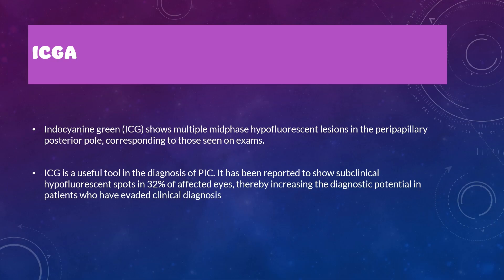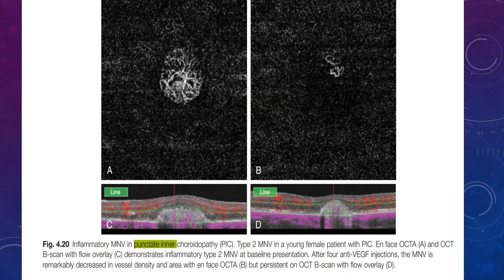On ICGA, PIC lesions appear as hypofluorescent or hypocyanescent spots. PIC can also be associated with CNVMs. On OCT-A, you can see the neovascular network in the deep capillary slab, and after treatment, the vascular network density is markedly decreased, appearing much less threatening.